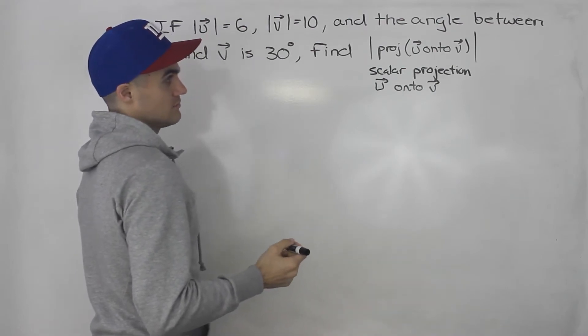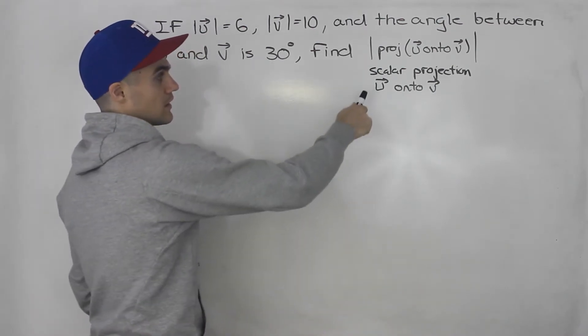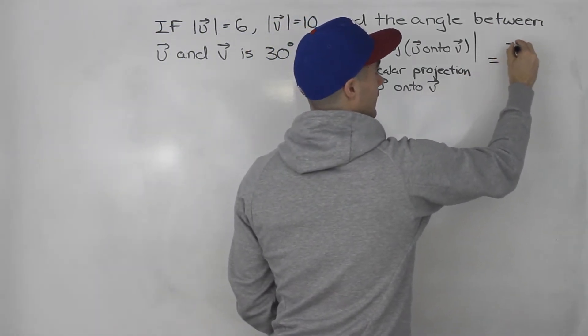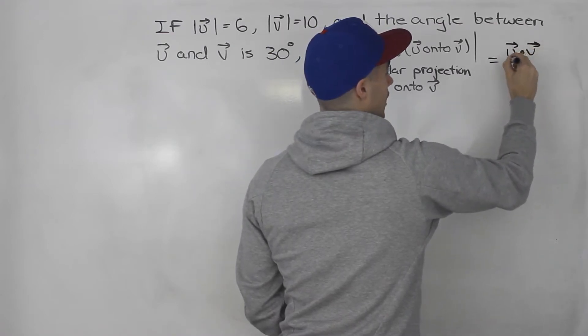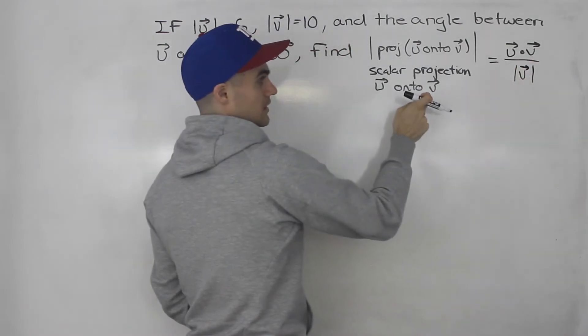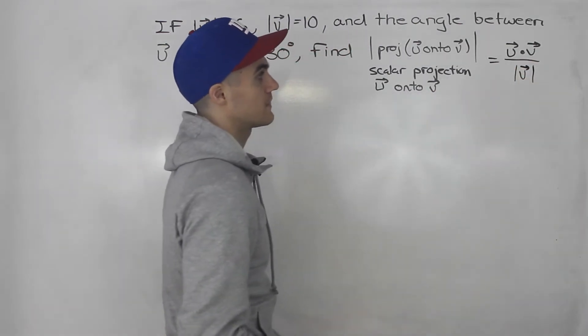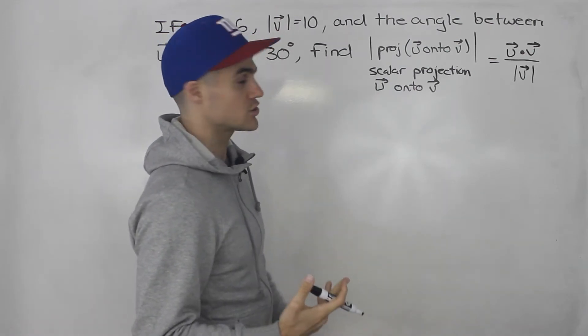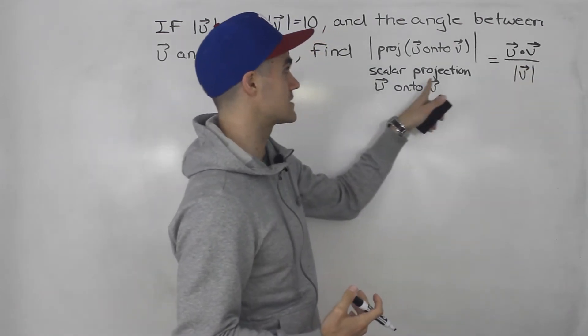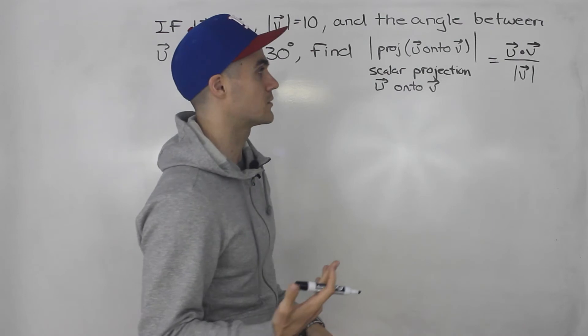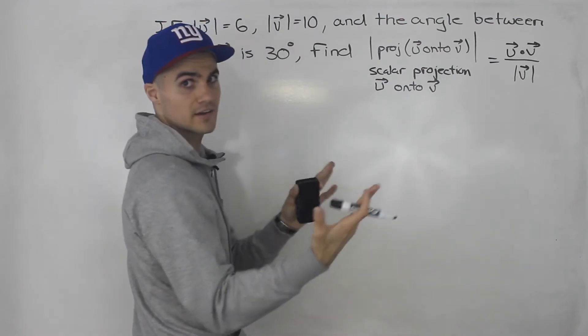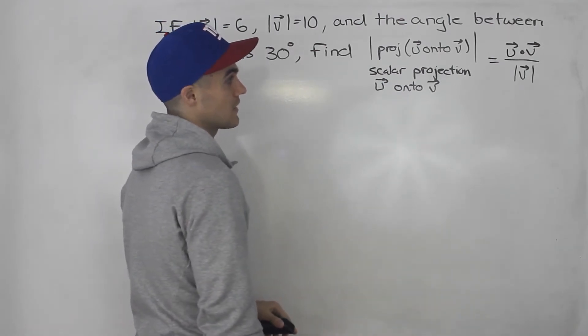Now with scalar projection, there's two formulas you can use when you're projecting u onto v. So one of them is u dot v, the dot product, over the magnitude of the vector you're projecting onto. So the magnitude of v in this case. And if it was just the vector projection, then it'd be the dot product over the magnitude squared times this vector. But this is the scalar projection, it's not the vector projection. So it's just a quick way of getting that scalar projection instead of finding the vector projection and then finding the magnitude of that vector.